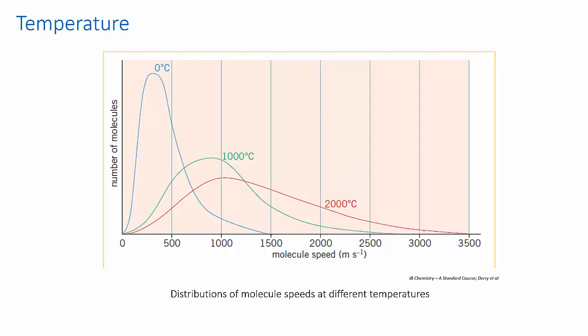This diagram shows the Maxwell-Boltzmann distributions for nitrogen molecules at 0 degrees Celsius, 1000 and 2000 degrees Celsius.